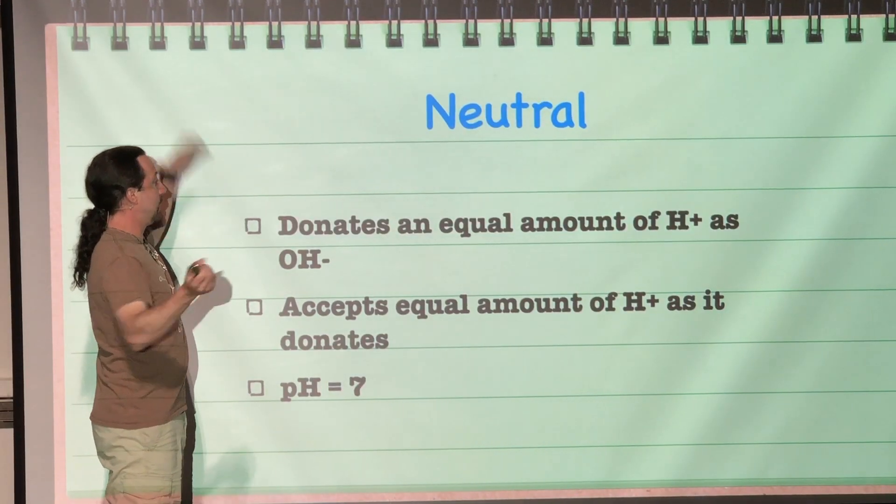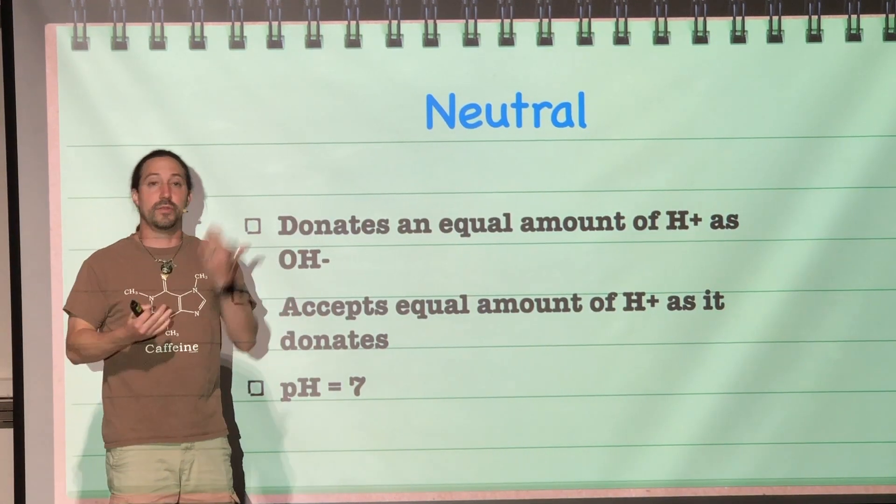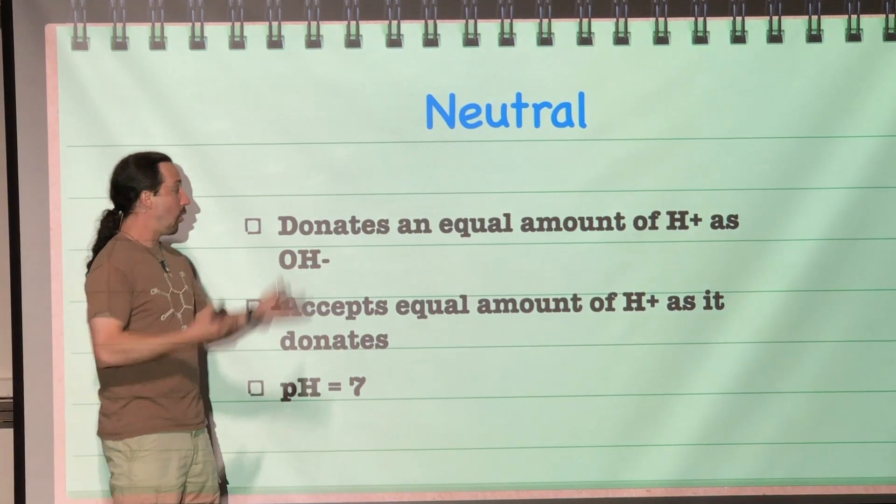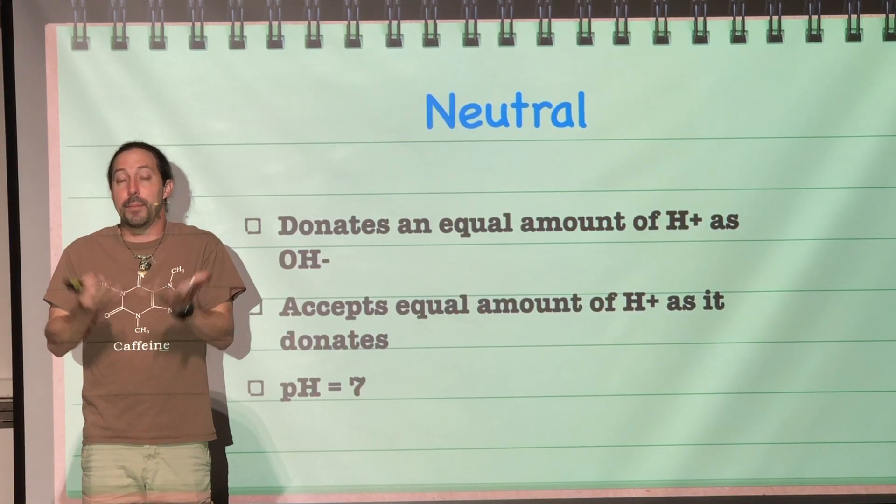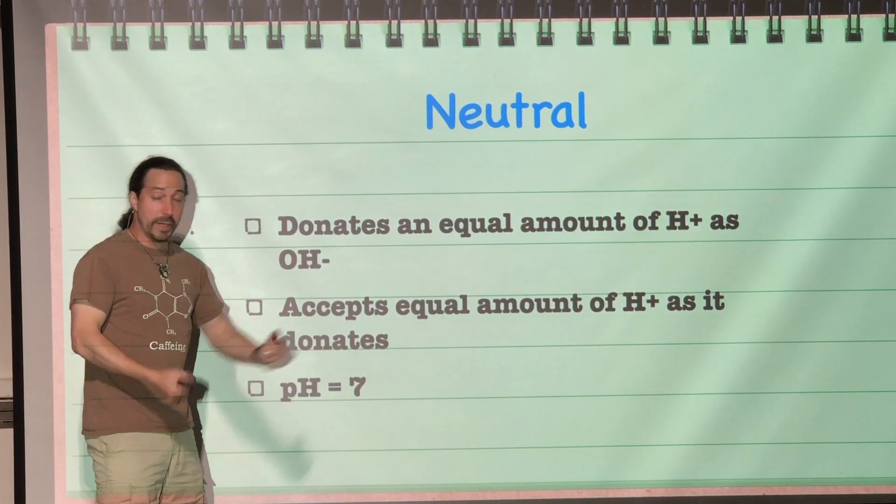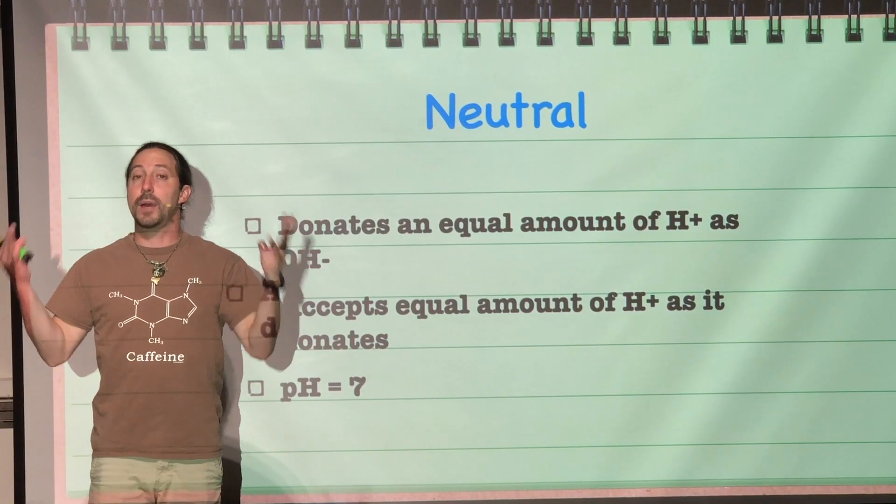And neutral, well, they would have an equal amount of donation of hydrogen ions as well as hydroxide ion, or they accept an equal amount of hydrogen ions as what they donate, thus staying in this immediate balance of hydrogen ions, and their pH would be 7. If we look at water, for example, pure water has a pH of 7.